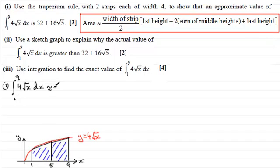It's going to be approximately then the width of a strip which is 4 units. We halve that, so we divide it by 2, and we multiply this all by the first height which is this height here when x equals 1. When x equals 1, if you substitute in here you're going to get 4 times the root of 1 which is 4, but I'm just going to show the working here as 4√1.